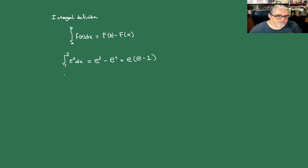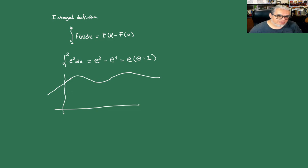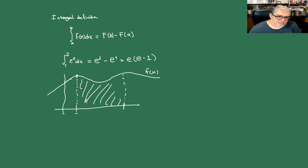Eso nos da la idea de que si tenemos una función que hace esta parte, y nosotros queremos, por alguna razón, buscar el área de esta región, nos tenemos que preguntar por la integral. Si esto es una f(x), esto vale a y esto vale b, esta área mide exactamente la integral de a a b de f(x) respecto de x. Va a depender de lo que haga la función.